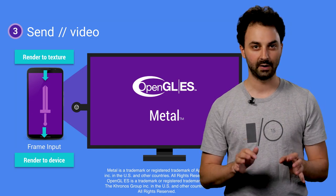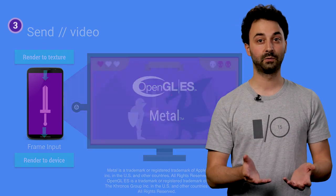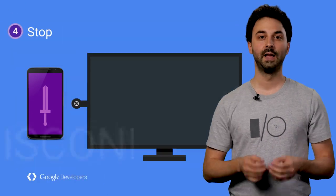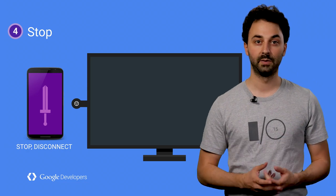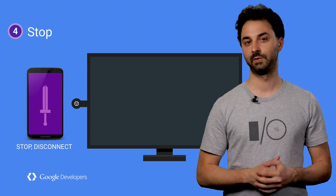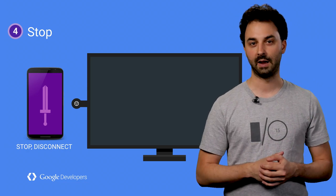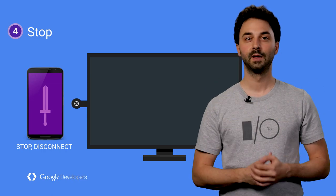The last stage is Stop, and it's pretty easy. To end a Remote Display session, you just kill the Remote Display receiver app using the Core Cast APIs. That's it.